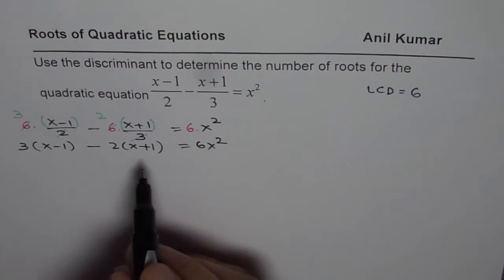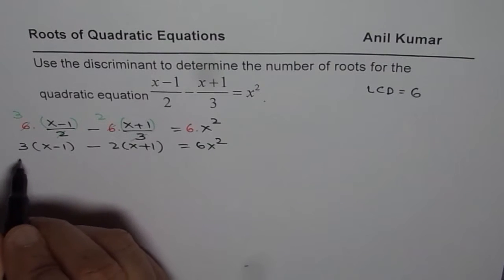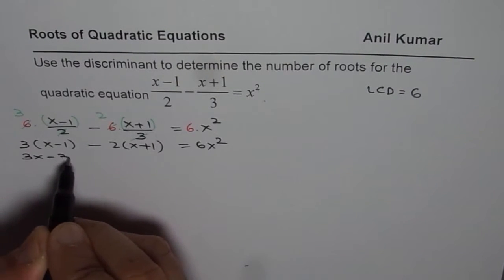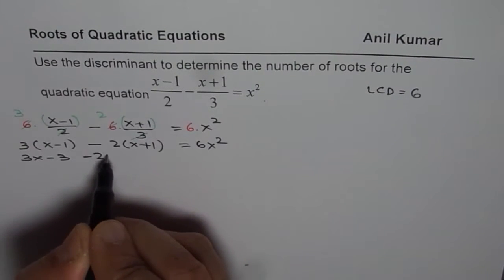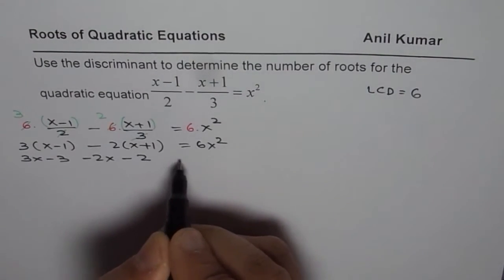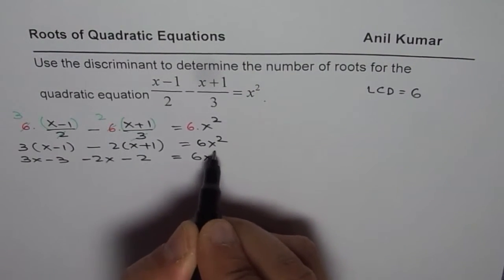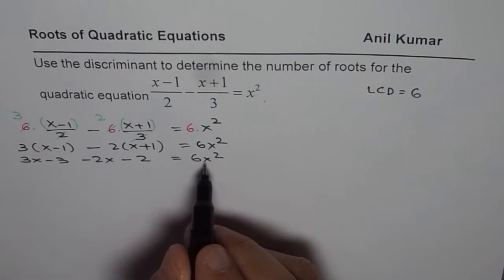Now let us expand and simplify. So when you expand, you get 3x minus 3. Here you get minus 2x minus 2 equals 6x squared.